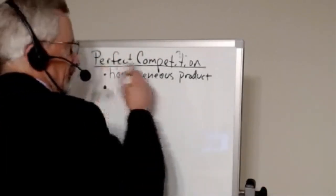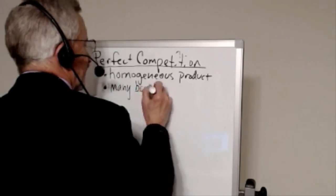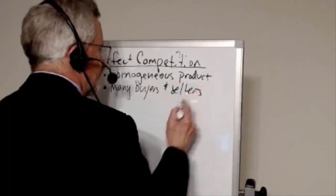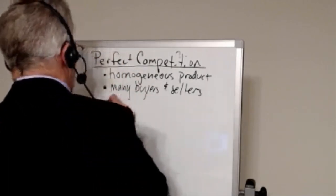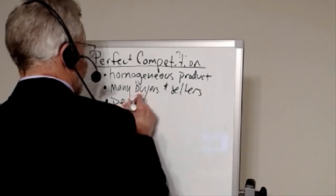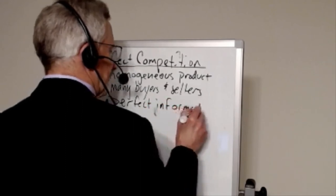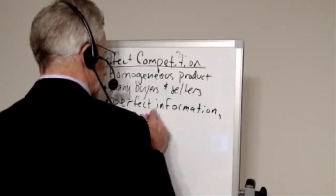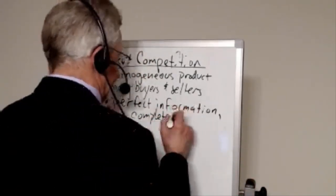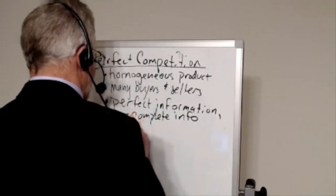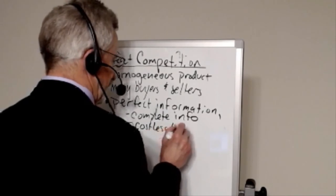What other things would we find in a perfectly competitive market? How about many buyers and sellers? This is a thickly traded market. Lots of people in it, both buying and selling. What else? How about something like perfect information? Or complete information. Complete information technically would allow there to be a little bit of uncertainty in the sense of probabilistic uncertainty.